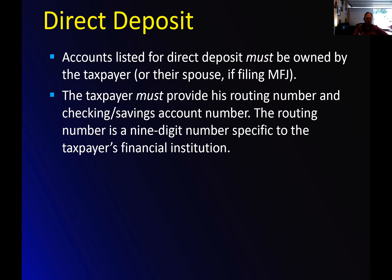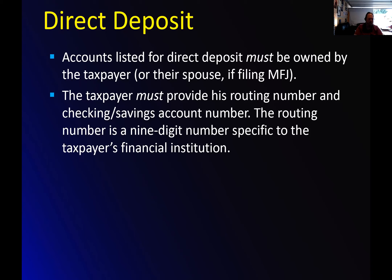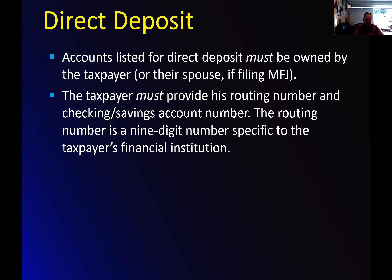For direct deposit, the accounts listed must be owned by the taxpayer or their spouse if married filing jointly — you can't deposit into someone else's account. The taxpayer must provide their routing number and checking account number. You wouldn't believe how many people screw up that number — it seems to be the number they can't read off their own check. Make sure you verify that number. So many times people give the wrong routing number or they realize the account was closed last year.